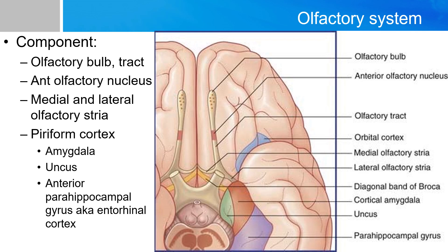The olfactory system has many components. You start with the olfactory nerve, which then goes to the olfactory bulb and travels through the olfactory tracts, meeting the anterior olfactory nucleus in the middle. At the end of the olfactory tracts, it splits into a medial and lateral olfactory striae. The lateral olfactory striae goes into the piriform cortex, which is the primary olfactory cortex, and includes the uncus, the amygdala, and the anterior perihippocampal gyrus. The anterior perihippocampal gyrus is also known as the entorhinal cortex, which is the secondary olfactory cortex.